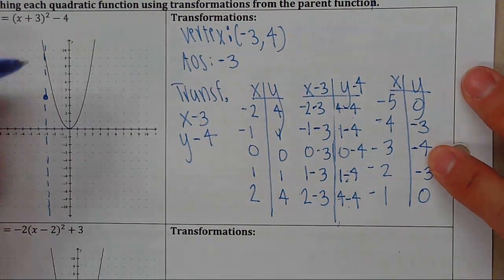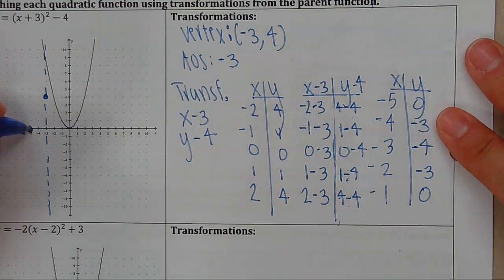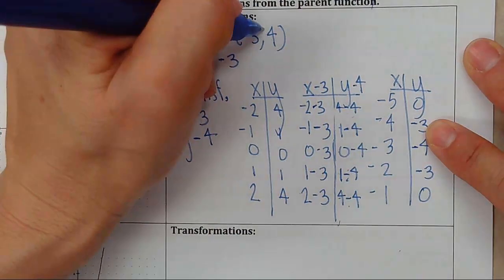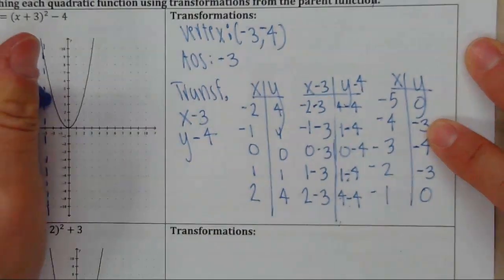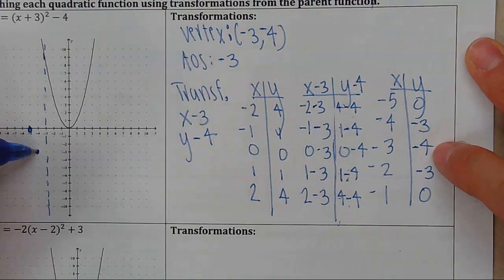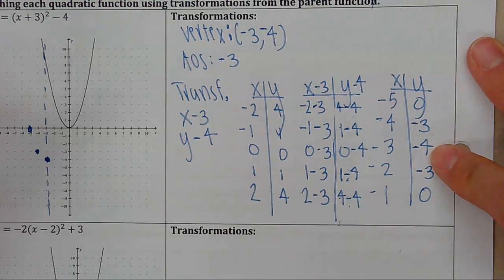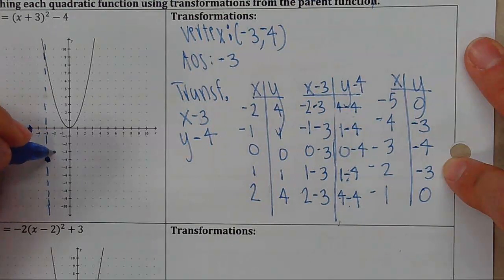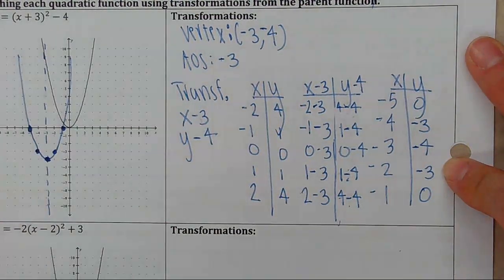Let's go ahead and plot these points: negative 5, 0 — negative 4, negative 3 — negative 3, negative 4, there's my vertex — negative 2, negative 3 — and negative 1, 0. And there's my graph.